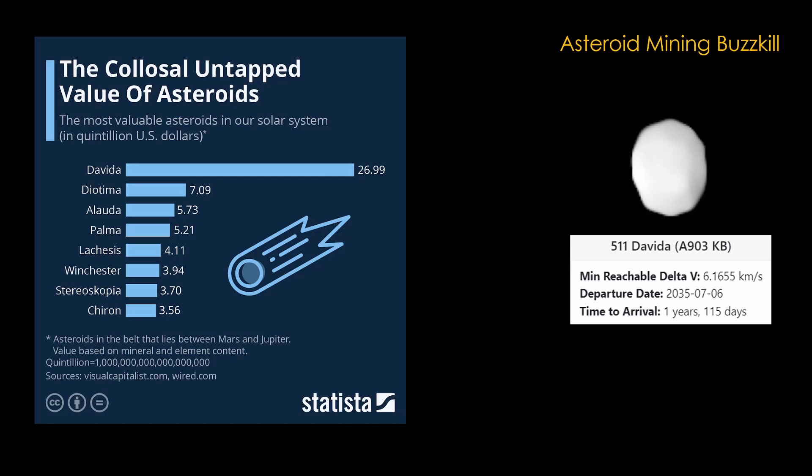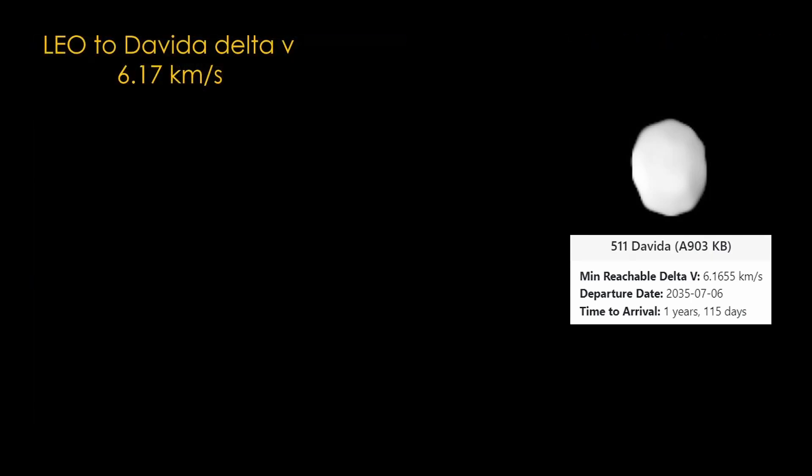It takes 6.17 km per second to get from low Earth orbit to DaVita. That is the same ballpark as what it takes to get a probe to Jupiter. The usual way to do this is to use your launch vehicle to toss you wherever you want to go, but let's assume you want to start in low Earth orbit, because reasons.